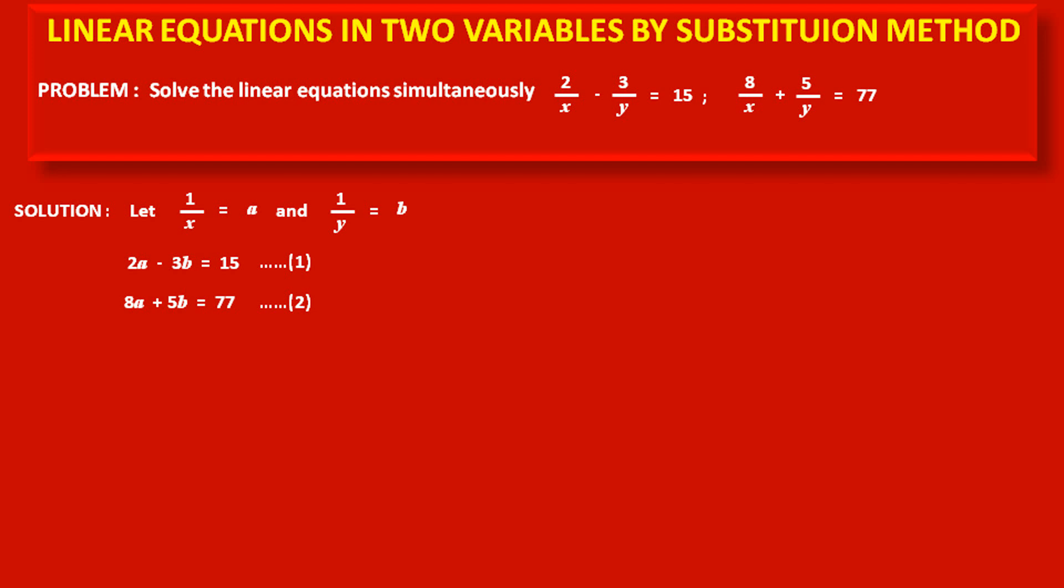Similarly, the second equation becomes 8a + 5b = 77. This is equation (2).